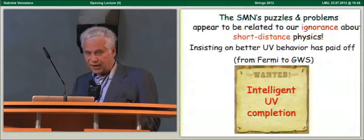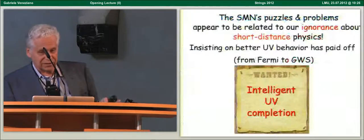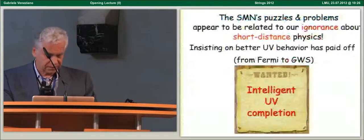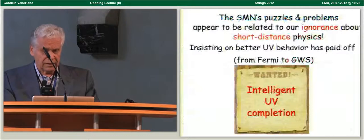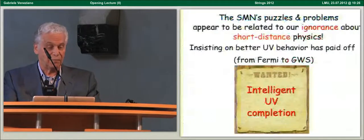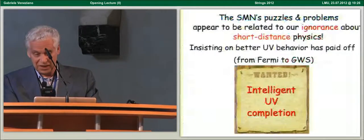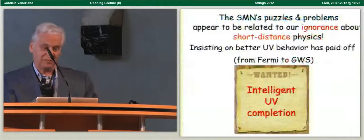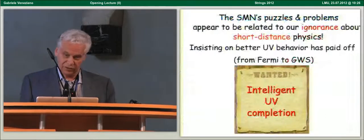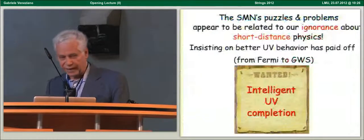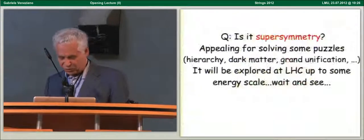So, to summarize, the standard model of nature's puzzles and problems appear, in my opinion, to be related to our ignorance about short-distance physics. And I think that insisting on the, and, sorry, I want to remind you that insisting on a better ultraviolet behavior has paid off already when one went from Fermi's theory of the weak interactions to the standard model. So, we wanted an intelligent UV completion.